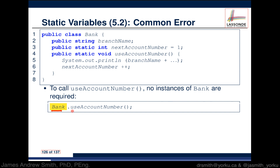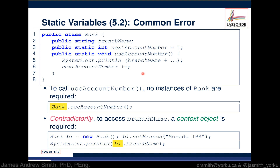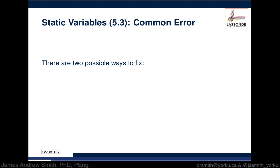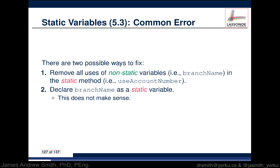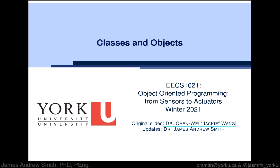To call useAccountNumber, no instance of Bank is required — you just use the class name. But to access branchName, a context object like b1 is required. This inconsistency is problematic. There are two ways to fix it: first, remove all uses of non-static variables like branchName inside the static method; or second, declare branchName as static — but that doesn't make sense since different bank branches have different names. So branchName should be specific to each bank instance. And that covers static variables.